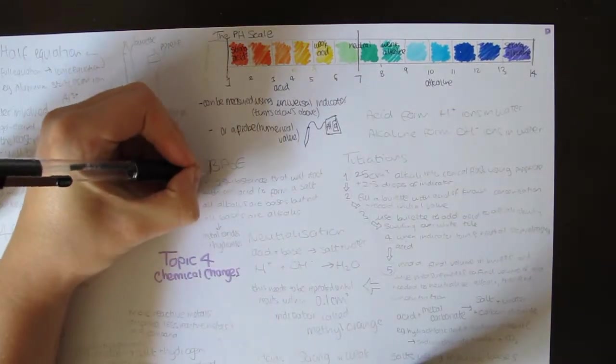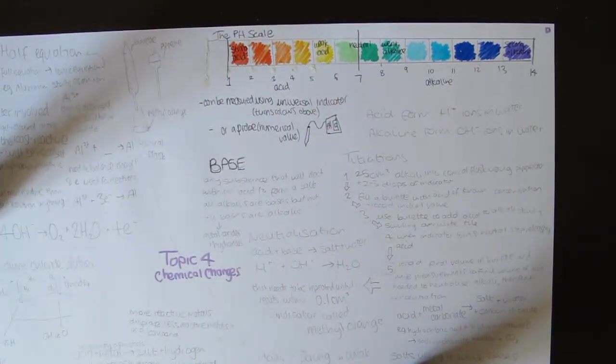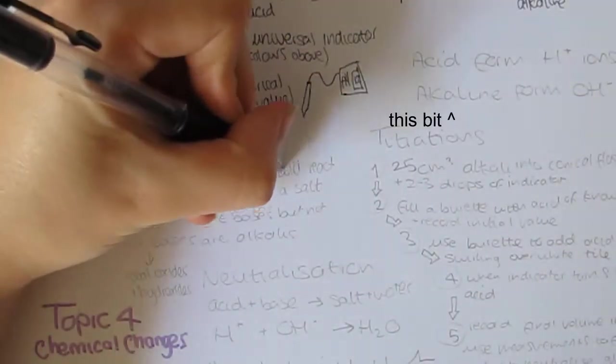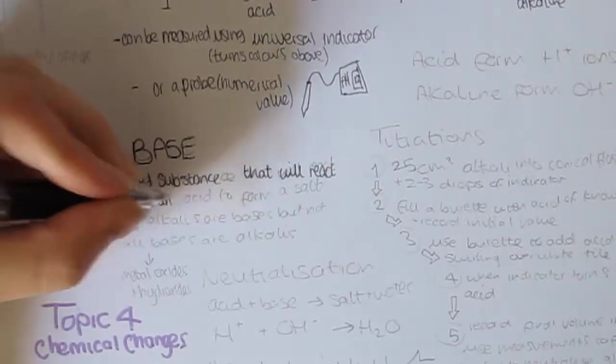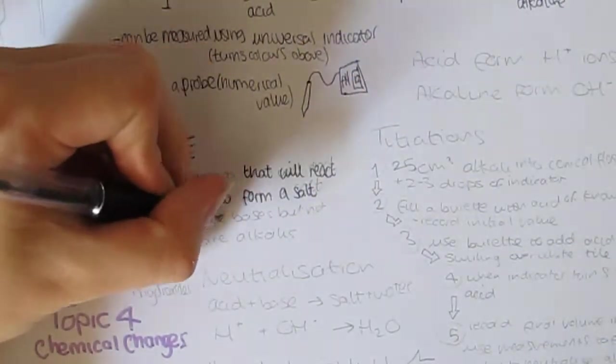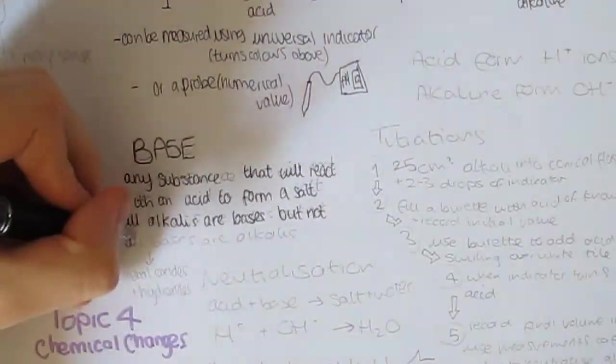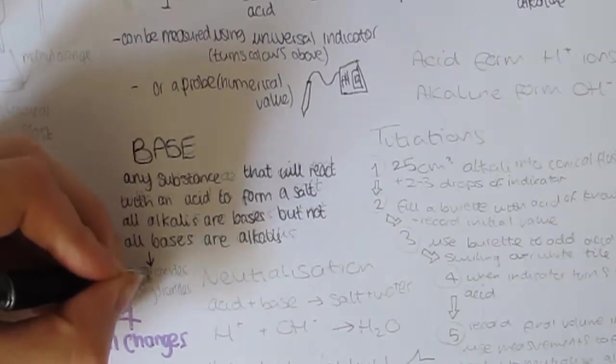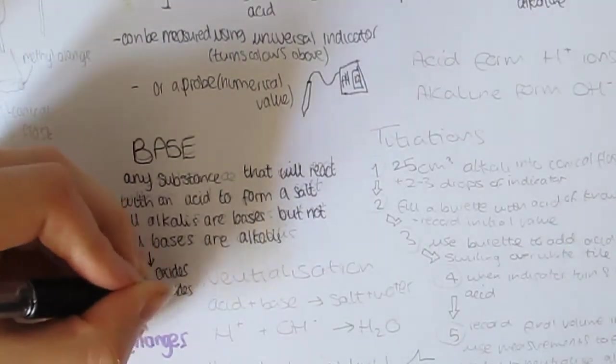Acids and bases neutralize each other. Acids have a pH less than 7 and form H+ ions in water, whereas alkali has a pH greater than 7. It forms OH- ions in water. A base is any substance that will react with an acid to form a salt. All alkalis are bases, but not all bases are alkalis.